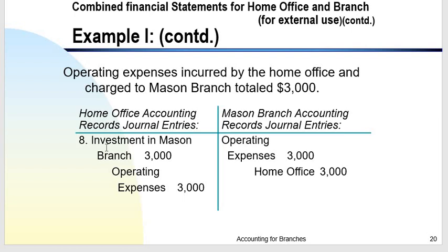Eighth transaction: operating expenses incurred by the home office and charged to Mason Branch totaled $3,000. These are allocations of expenses from the home office to the branch. The home office entry is: debit Investment in Mason Branch $3,000, credit Operating Expenses — because expenses originally debited by the home office are now allocated to the branch. The branch entry is: debit Operating Expenses $3,000, credit Home Office.